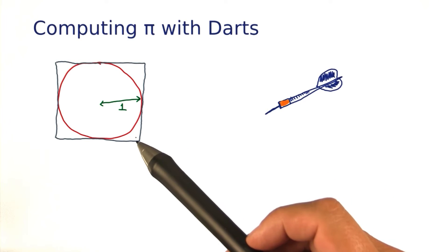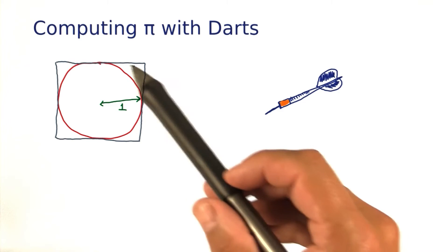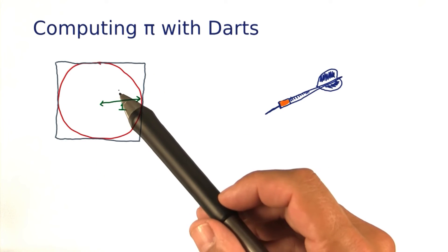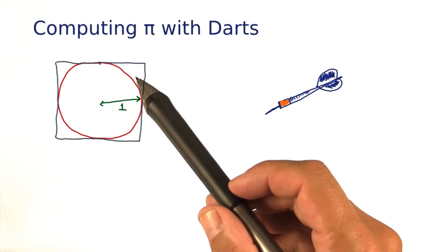Specifically, we'll throw random darts into the square. Most of the time, we'll hit the circle. Sometimes we'll miss.